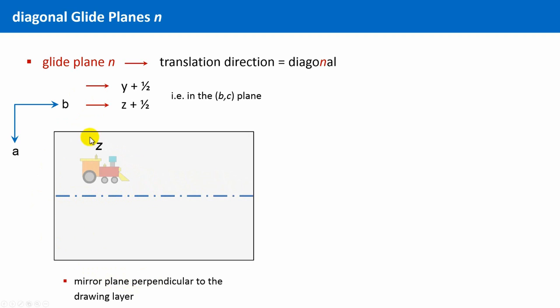This is the starting situation and now we reflect this locomotive at this plane and this gives this picture. The height, the z-coordinate, changed of course not. Still, the locomotive lies behind the drawing plane. And now, two translations have to be applied. First, by one half of the unit cell along the y-axis and then also by one half along the z-axis. So, the locomotive is now above the drawing layer and in total a diagonal movement was carried out, parallel to the b-c plane.